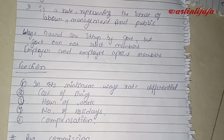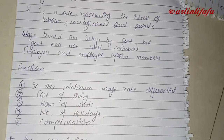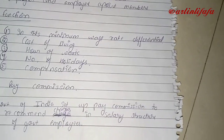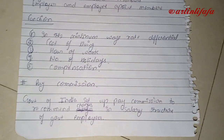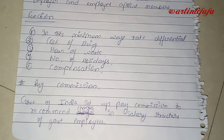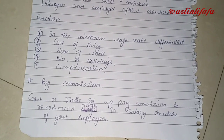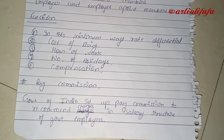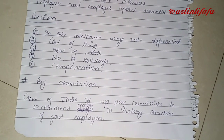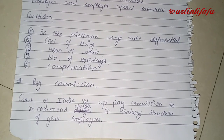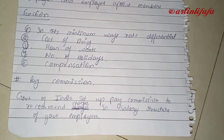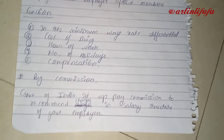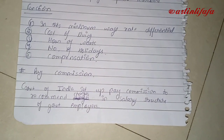The main purpose of wage boards is to determine wage, salary, and income. The functions of wage boards include: defining the minimum wage rate, checking the cost of living per person, determining hours of work, number of holidays, and what compensation should be provided. The next topic is the pay commission.